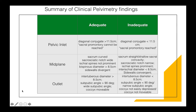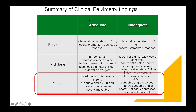The clinical pelvimetry findings for the outlet can be summarized as follows. If the outlet is adequate, report it as: inter-tuberous diameter more than 8.5 centimeters, sub-pubic angle more than 90 degrees (wide sub-pubic angle), and coccyx is movable. If the outlet is inadequate, report it as: inter-tuberous diameter less than 8.5 centimeters, sub-pubic angle less than 90 degrees (narrow sub-pubic angle), and coccyx not easily depressed or not movable.